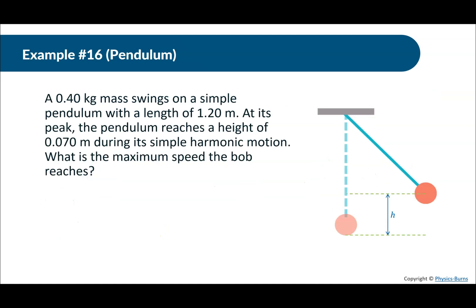A 0.4 kilogram mass swings on a simple pendulum with a length of 1.2 meters. At its peak the pendulum reaches a height of 0.07 meters during its simple harmonic motion. What is the maximum speed of the bob? Let's write some things out: mass = 0.4 kg, length = 1.2 m, height = 0.07 m. We want to find the speed at the lowest point.